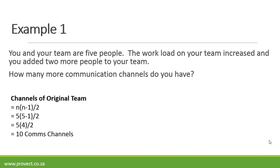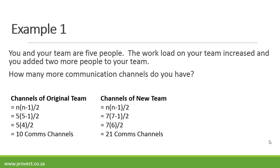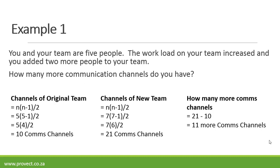Now if you add two more resources, you've got seven people on the team. It's seven times six divided by two — 42 divided by two is 21 communication channels. How many more communication channels are there? It's 21 minus 10, which is 11 more communication channels.